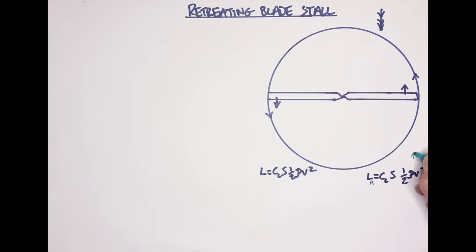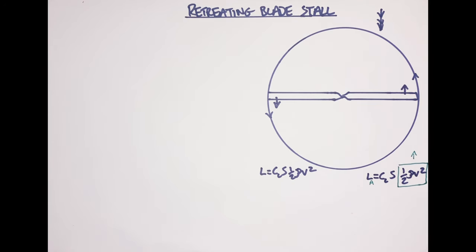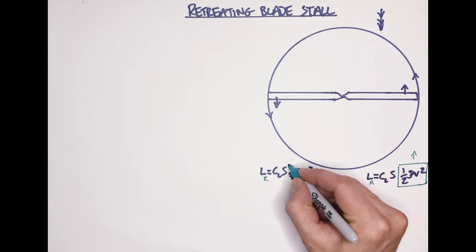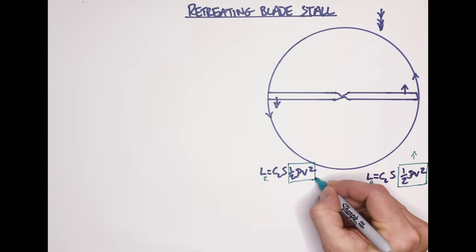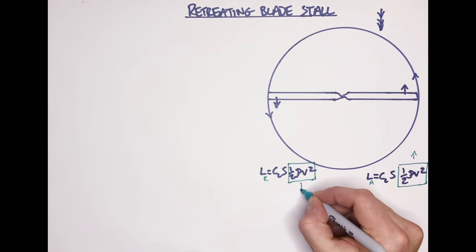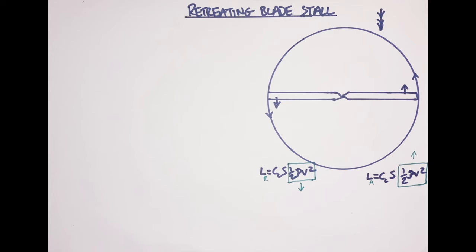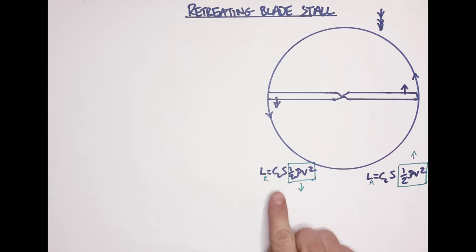This means our dynamic pressure - which depends on the square of the velocity - is considerably higher on the advancing side. On the retreating side we've got much lower velocity, so the dynamic pressure is much lower. If we leave things as they are, we end up with a massive dissymmetry of lift between the retreating and advancing blades. To balance it out, we need to increase the lift on the retreating side. We can't change the surface area of the blade, so the only thing we can change is the coefficient of lift on each side.